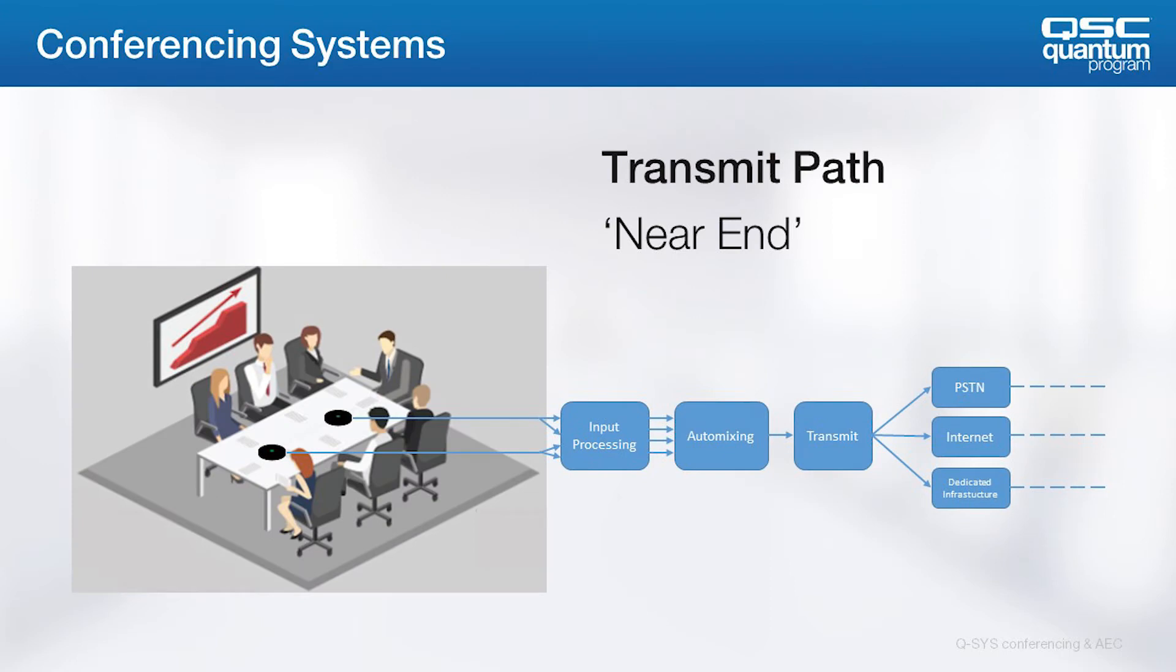The participants in a given room view themselves as the near-end in conferencing terminology. They are transmitting their voices to the remote participants and receiving from them via the linking technology being used. This all starts with the microphones, which may be placed on the table, as in this example, or elsewhere, such as the ceiling.